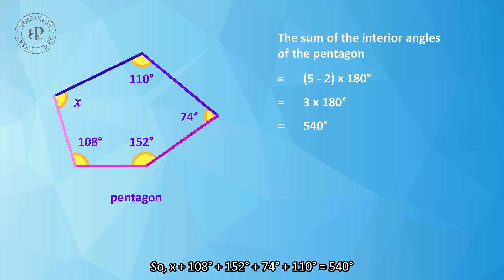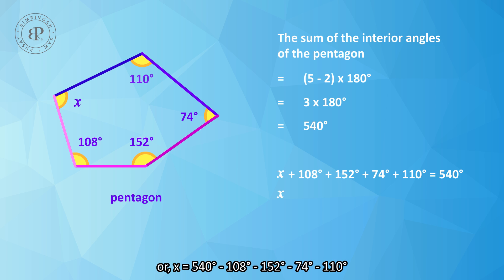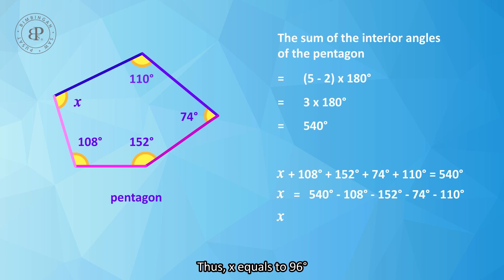So, x plus 108 plus 152 plus 74 plus 110 equals 540, or x equals 540 minus 108 minus 152 minus 74 minus 110. Thus, x equals 96 degrees.